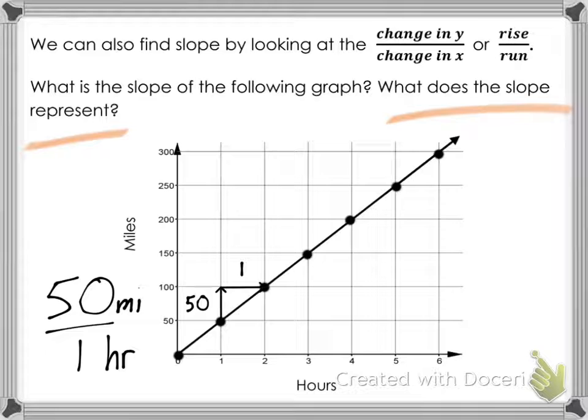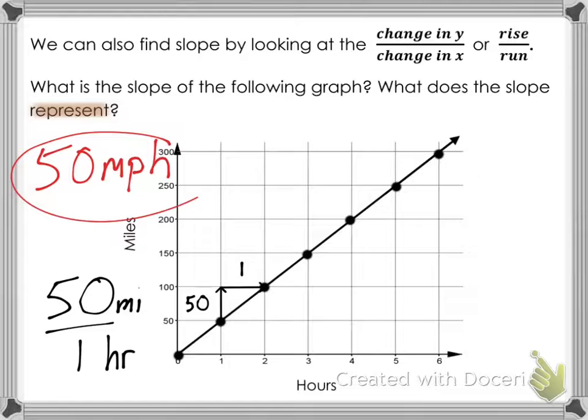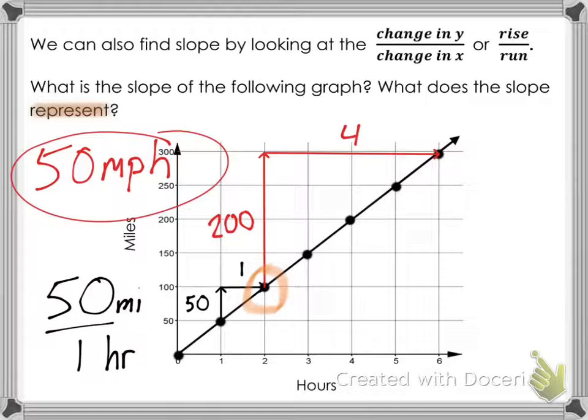The second question: what does the slope represent? The y-axis is miles and the x-axis is hours, so that means this is miles per hour — 50 miles per hour is the representation of the slope. Just to show another way: you don't have to start at the same two dots. I rose 200 and ran 4, giving 200 over 4, which simplifies to 50. Same answer.